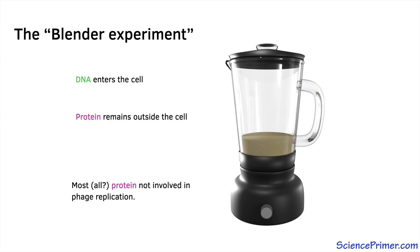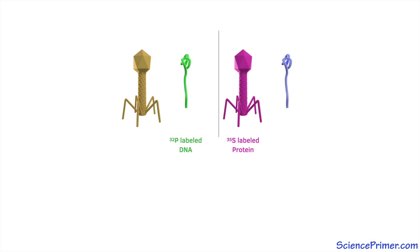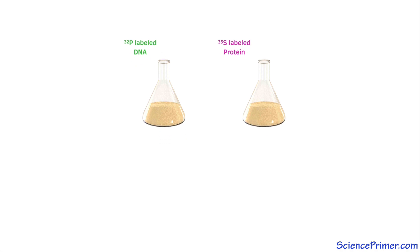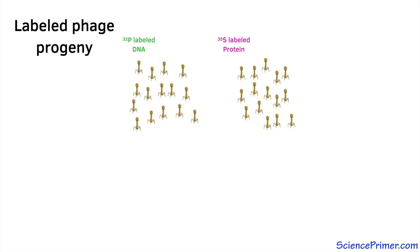They tested this hypothesis by infecting bacteria with either P32 or S35 labeled phage and isolating the progeny that the infection produced. These experiments showed that significant amounts of P32 was passed into the viral progeny, but almost none of the S35 was detected in the progeny.